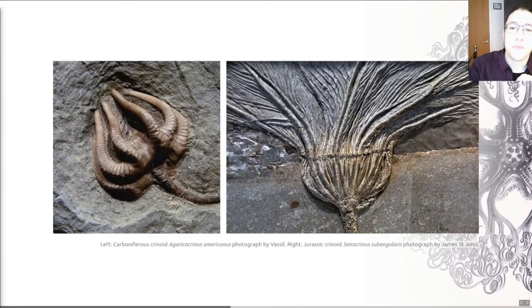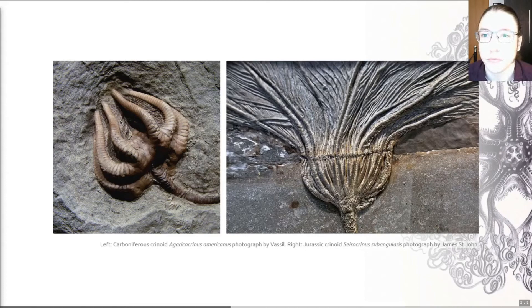On the right, you can see an example of the group of crinoids, the Articulata, that really exploded post the Permo-Triassic extinction. All post-Paleozoic crinoids, with a few exceptions only in the Triassic, are members of this group called the Articulata. The example on the right is a specimen from a famous Lagerstätte in Germany called the Holzmaden. So that's the crinoids.